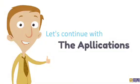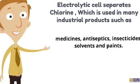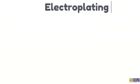Let's continue with the applications. First, it's used to separate chemical compounds by means of electrolysis. It's also used in electroplating. Electrolytic cells separate chlorine, which is used in many industrial products, such as medicines, antiseptics, insecticides.